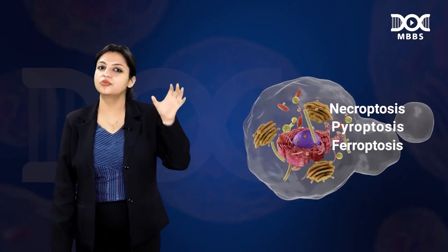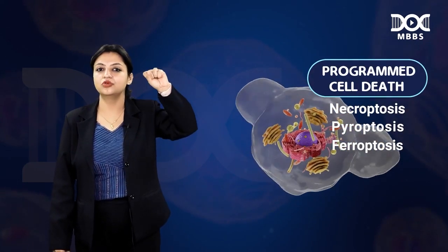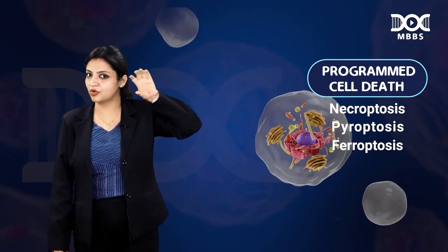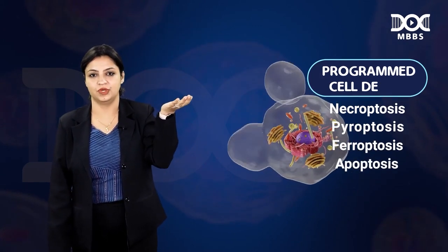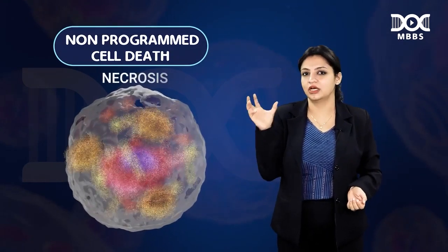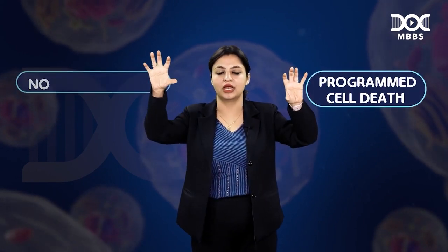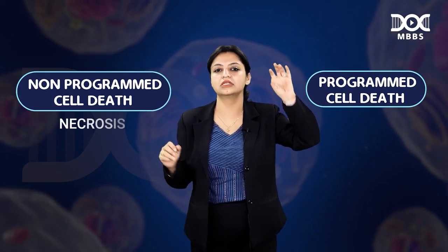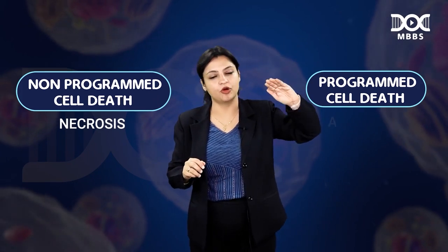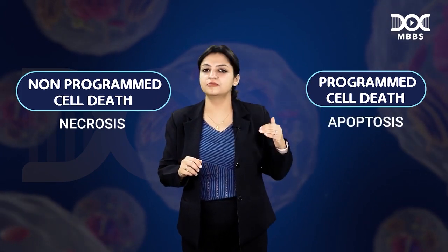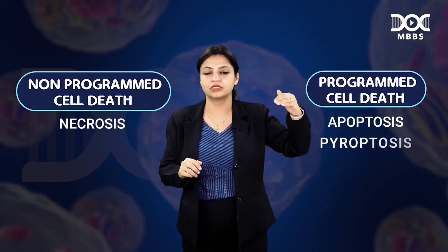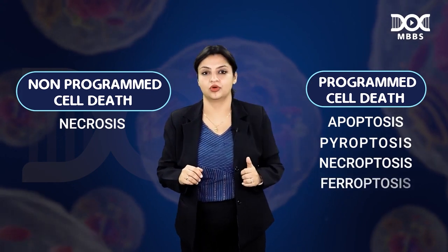All these come under programmed cell deaths. The most important of programmed cell death is apoptosis. For non-programmed cell death, we have only necrosis. So whenever they ask you to classify cell death, you say programmed and non-programmed. Non-programmed is necrosis; programmed — most important is apoptosis, followed by pyroptosis, necroptosis, and ferroptosis.